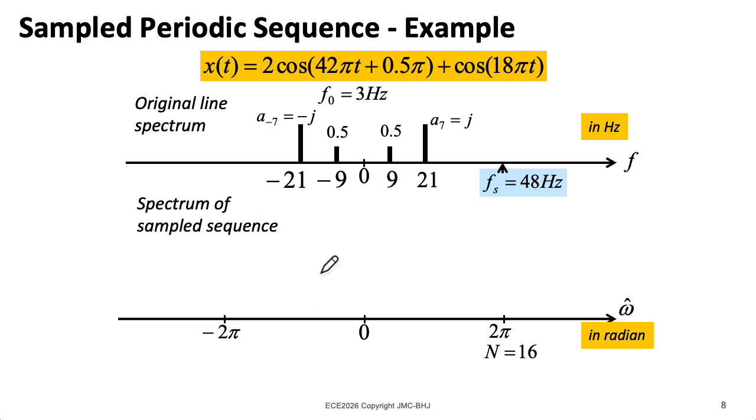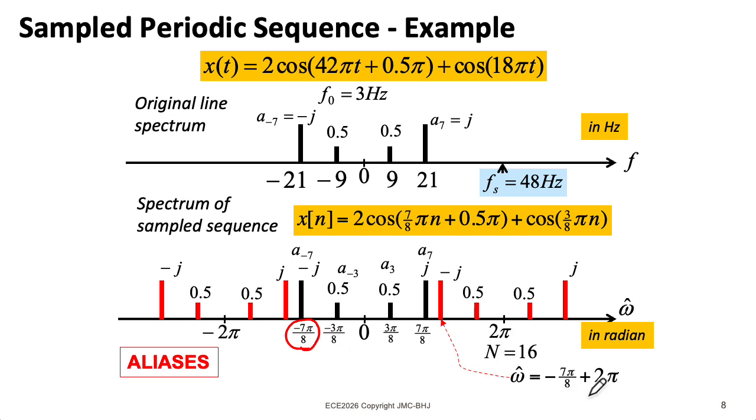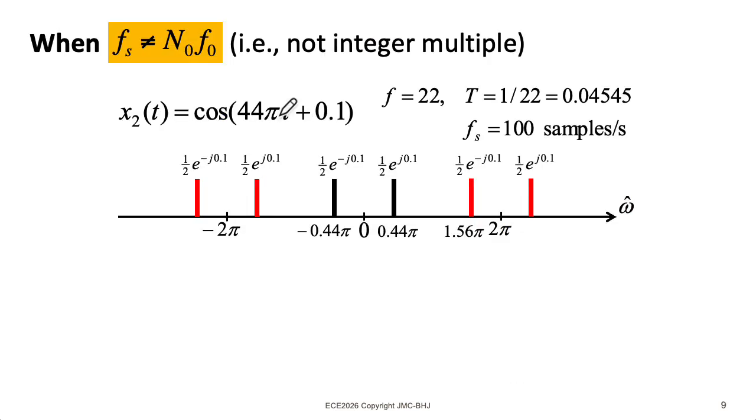So in the lower graph here, we can plot the sampled spectrum. Wherever the sample rate lands in the original continuous time plot corresponds to 2π in omega hat land. But remember that there are going to be aliases going either direction infinitely far. For instance, the spectral line at minus 7π is going to have an alias at plus 2π above that.